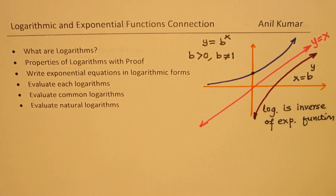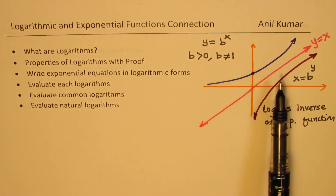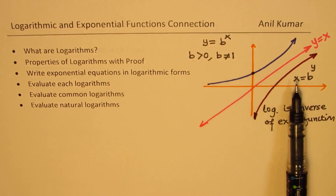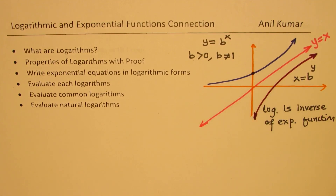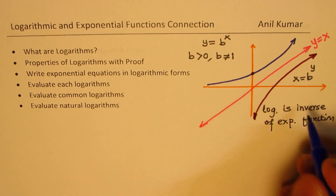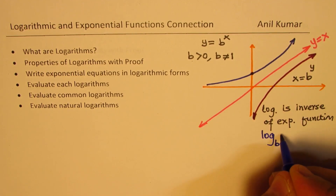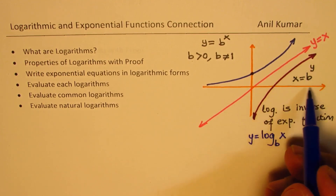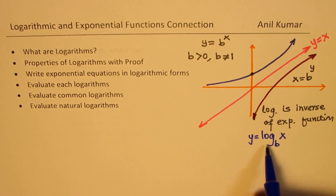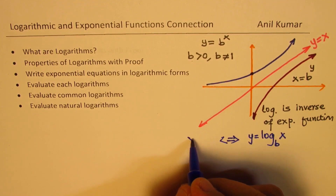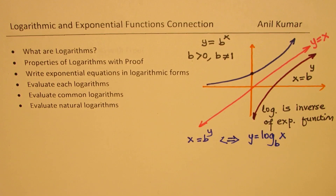Both are functions. The inverse helps you find values — reverse values. If you have anything like b to the power of x, we can find the value of x using logarithms. What I have written is an exponential form. Generally, we write this with the same base b, and write it as the logarithm function: y equals log to the base b of x. This is exactly the same as x equals b to the power of y — these two are the same thing.